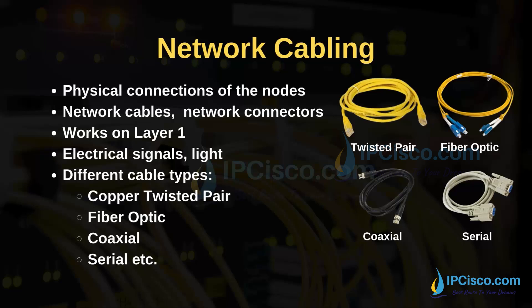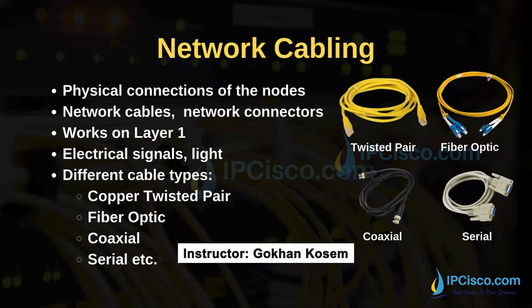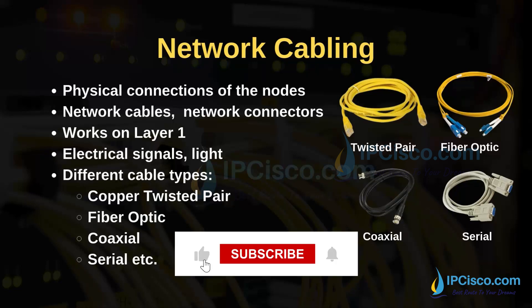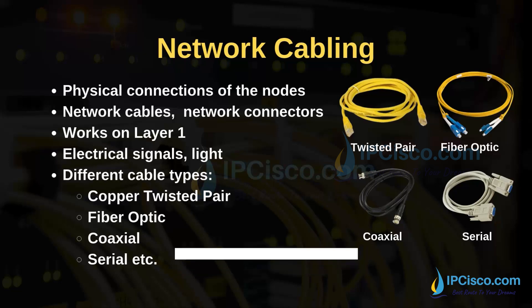In this lesson, we will focus on one of the key lessons of computer networks: network cabling. Network cabling is the physical connections of the nodes. There are various network cables and connectors used for these purposes. This is the physical layer of the OSI model — in other words, layer 1.